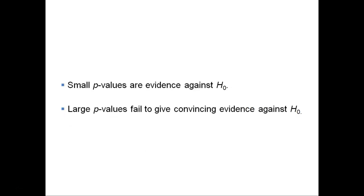Small p-values are evidence against the null hypothesis because they say that the observed result is unlikely to occur when the null hypothesis is true. Large p-values fail to give convincing evidence against the null hypothesis because they say that the observed result is likely to occur by chance when the null hypothesis is true.